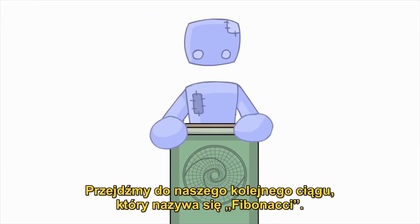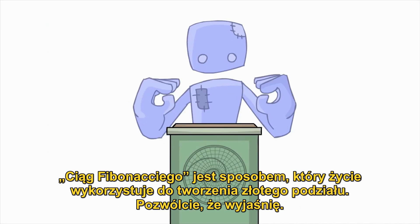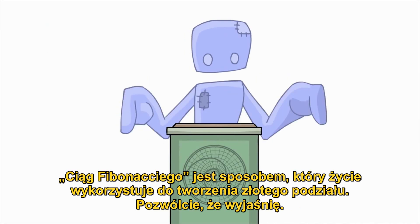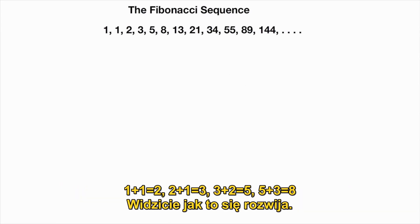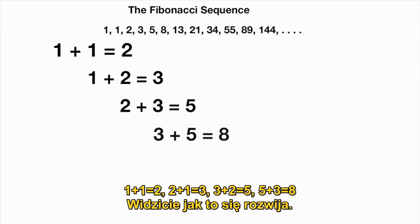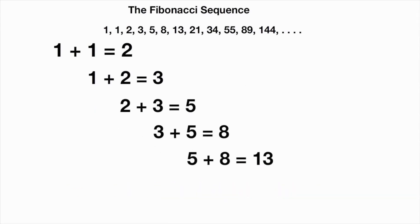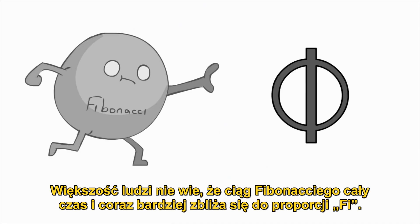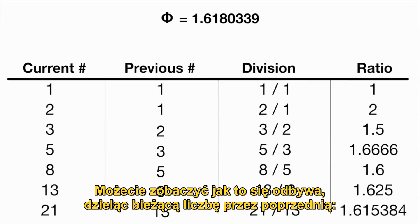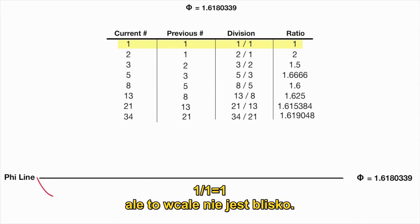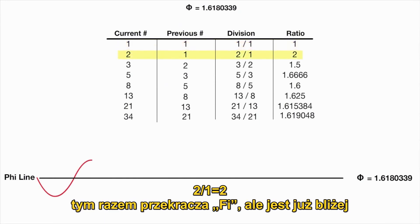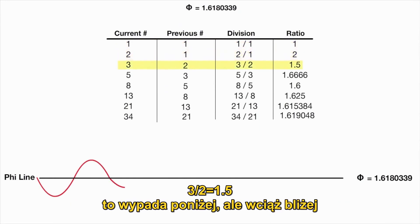Let's move on to our next sequence, which is called Fibonacci. The Fibonacci sequence is life's way of creating the golden mean. This sequence is continually made from adding the previous number to the current: 1 and 1 is 2, 2 and 1 is 3, 3 and 2 is 5, 5 and 3 is 8. What most people don't know about Fibonacci is that it actually continually strives closer and closer to the Phi ratio. By dividing the current number into the last, you can see this happening: 1 into 1 is 1 — well, that's not close at all. 2 into 1 is 2 — this time it's over Phi, but closer. 3 into 2 is 1.5, which is under, but closer still.